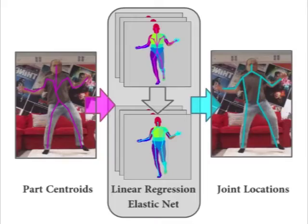We estimate the centres of body parts. To compare with other pose estimation systems, we train a linear regressor from part centroids to joint locations using our training dataset. The regressor is trained with an elastic net regulariser, where the weight between the lasso and the ridge regularisers is chosen by cross-validation.